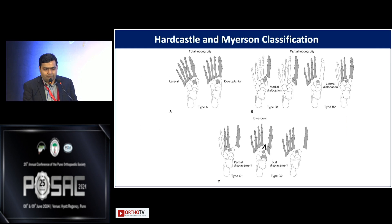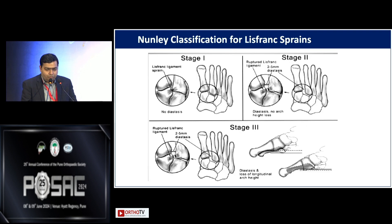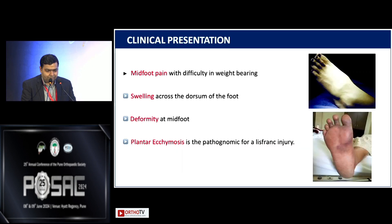For fractures, we normally use the Myerson classification, divided into three groups: total incongruity, partial, and a divergent variety. For Lisfranc sprains, we use the Nulli classification. Stage 1 has no diastasis — just a sprain of the Lisfranc ligament. Stage 2 involves rupture with diastasis of around 2 to 5 mm. Stage 3 includes the above changes plus a loss of longitudinal arch height.